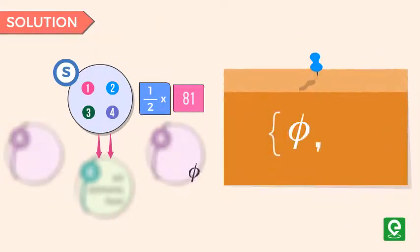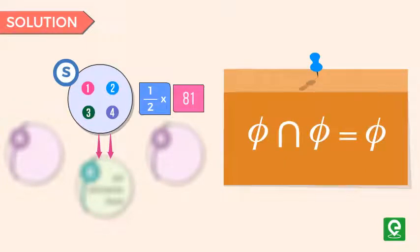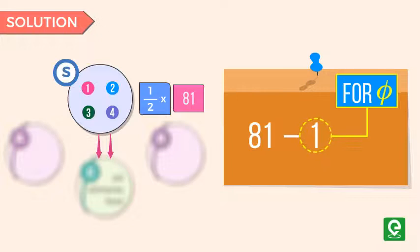So this pair is phi comma phi. But the null set is disjointed with itself as the intersection of two null sets is a null set itself. So the total number of unordered pairs will be (81 minus 1) divided by 2.